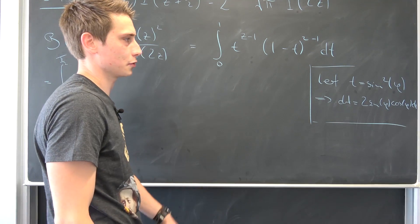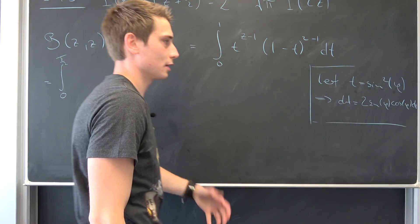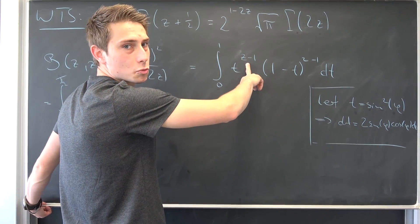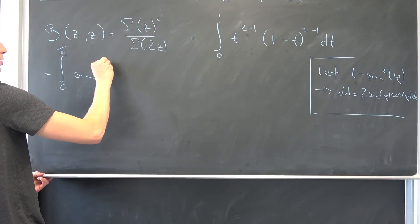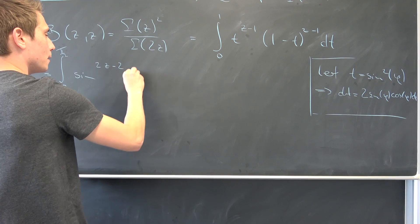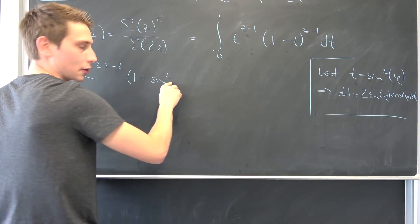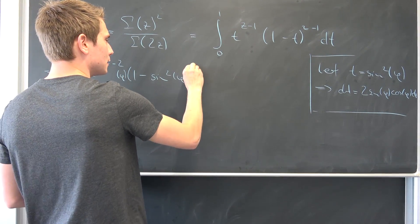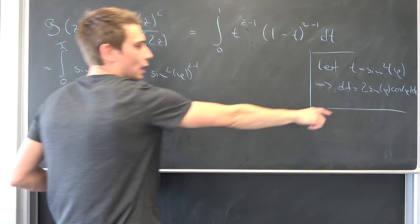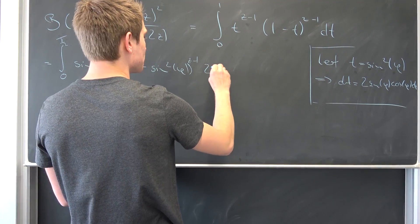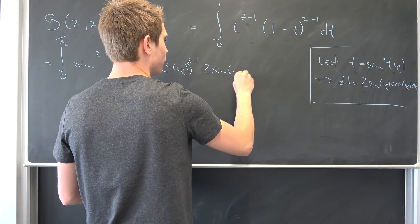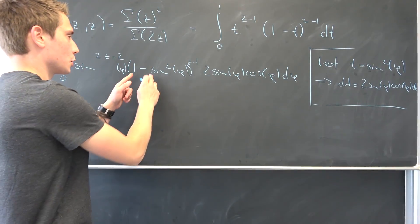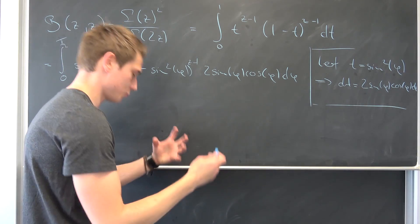Just some basic substitution — you can take the square root and then the inverse sine on both sides. We are going to get sine to the 2z minus 2 power, then 1 minus sine squared of phi to the z minus 1 power, and our dt is 2 times sine of phi times cosine of phi d phi. We know that 1 minus sine squared equals cosine squared by the Pythagorean identity.